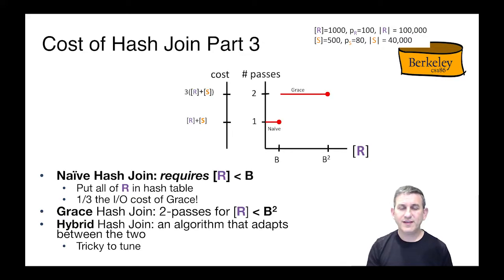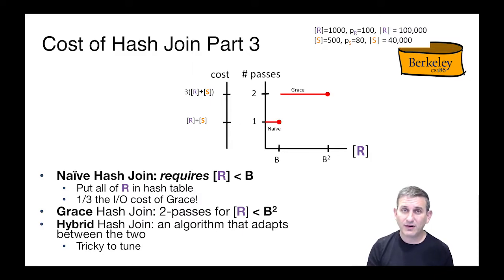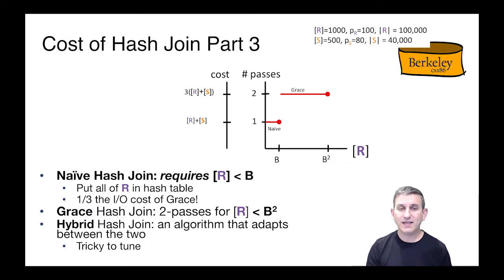We've learned two hash join algorithms — naive and grace — and it's not the case that one is always better. Sometimes naive hash join is better than grace. Naive hash join requires that R fits in memory (|R| < B), which is a strong assumption, but if we can do that, it's one-third the IO cost of grace, scanning R once and S once. Grace hash join, on the other hand, handles R up to B squared, giving much more dynamic range. There's a cost diagram in the upper right with the x-axis being the size of R in pages and the y-axis being cost or number of passes, which increases again with recursive partitioning.